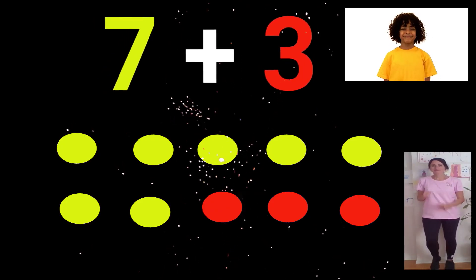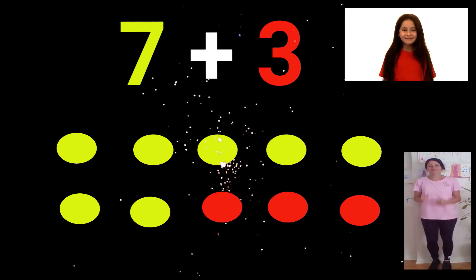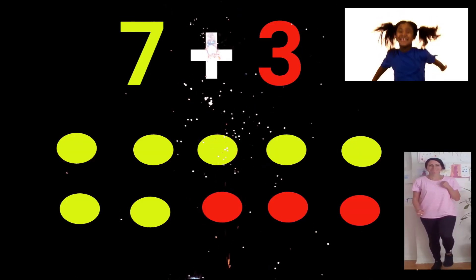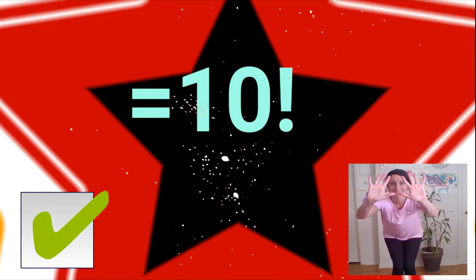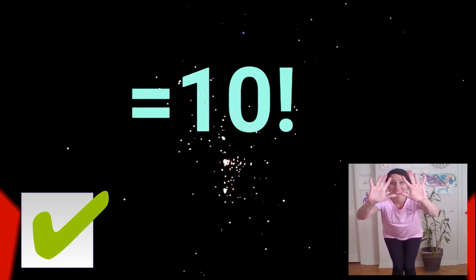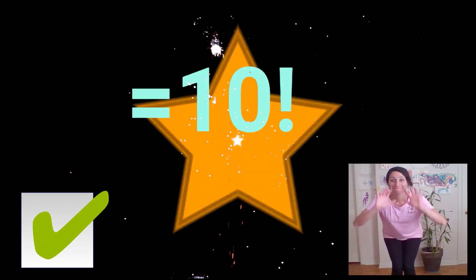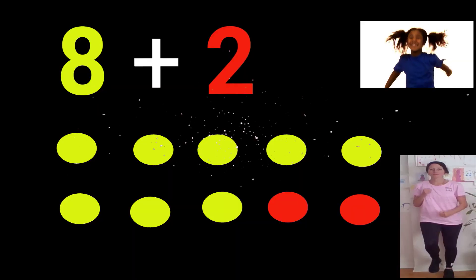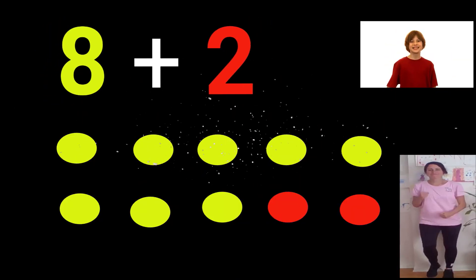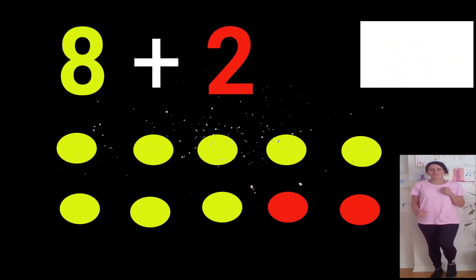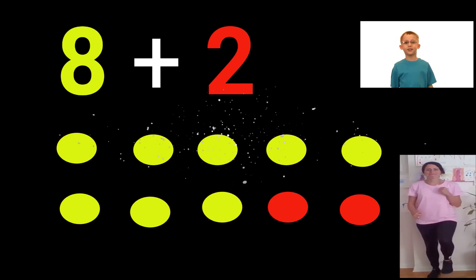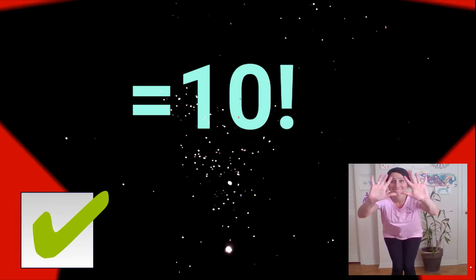Seven plus three equals ten. Eight plus two equals ten.